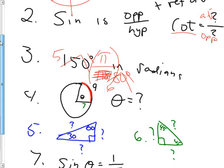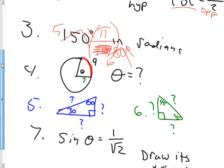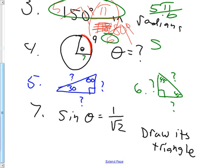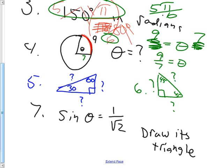Number two: cotangent is adjacent over opposite. You just take the tangent, which is opposite over adjacent, and you flip it. Number three: we multiply by pi over 180, and we got 5 pi over 6. After we reduce it, 5 pi over 6 is what 150 degrees converts to. For number four, S equals theta R is your key formula. If they tell you two of them, you can figure out the other one. The radius was 7, and the arc length S was 9. So it's 9 equals theta times 7, divide by 7, and 9 sevenths equals theta.